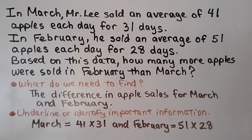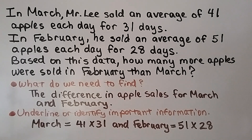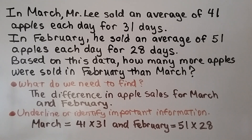In March, Mr. Lee sold an average of 41 apples each day for 31 days. In February, he sold an average of 51 apples each day for 28 days. Based on this data, how many more apples were sold in February than March? We need to find the difference in apple sales for March and February. We can underline or identify the important information. March equals 41 times 31 days, and February equals 51 times 28 days.